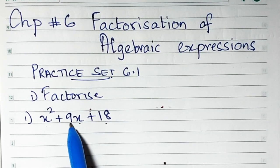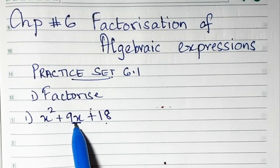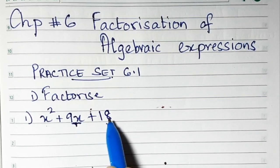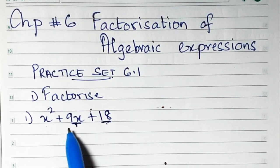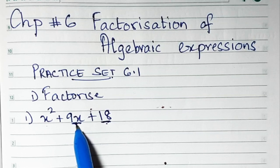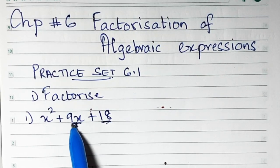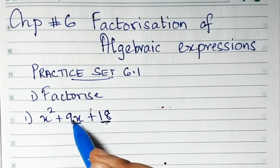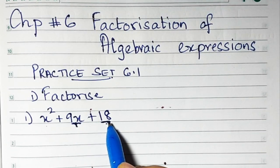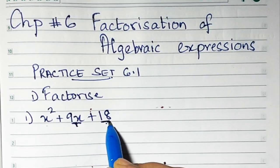Now you have to split the middle term. Before doing that, you also have to consider the last term. You have to split the middle term in such a way that the product of those two numbers into which you are splitting should be equal to the last term.